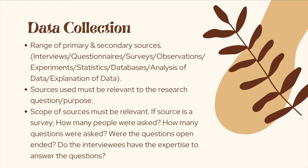Another thing is the scope of sources must be relevant. For instance, if you're going to be doing a survey or interview, you should also look at how many people were asked, how many questions were asked, what type of questions were asked, and whether the questions were open-ended or closed-ended. Open-ended questions generally give you more detail and actual thought process in the answer. But if the type of investigation requires a larger number of respondents more so than quality responses, closed-ended questions may be better. You could also look at whether the interviewees have expertise to answer the questions. The type of explanation you give depends on the type of research and its purpose — a lot of your justification has to be based on what the research should be about and what you should gain from it.